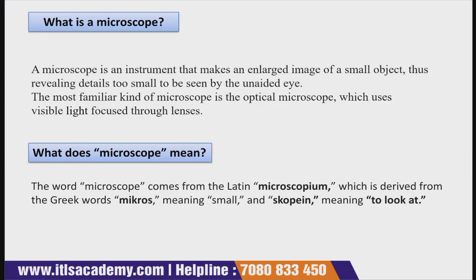A microscope is an instrument that makes an enlarged image of a small object, thus revealing details too small to be seen by the unaided eye. The most familiar kind of microscope is the optical microscope, which uses visible light focused through lenses.